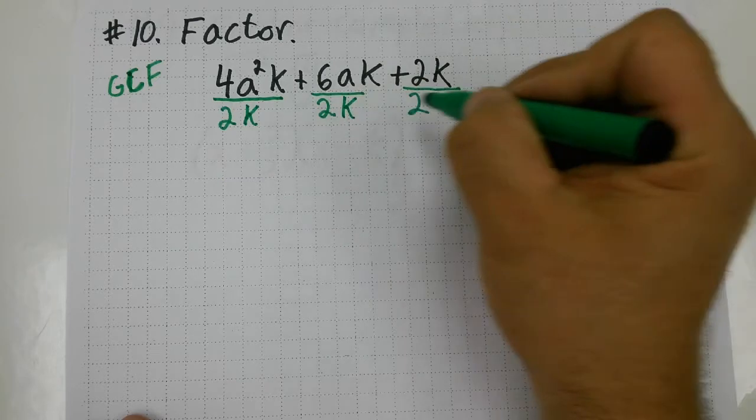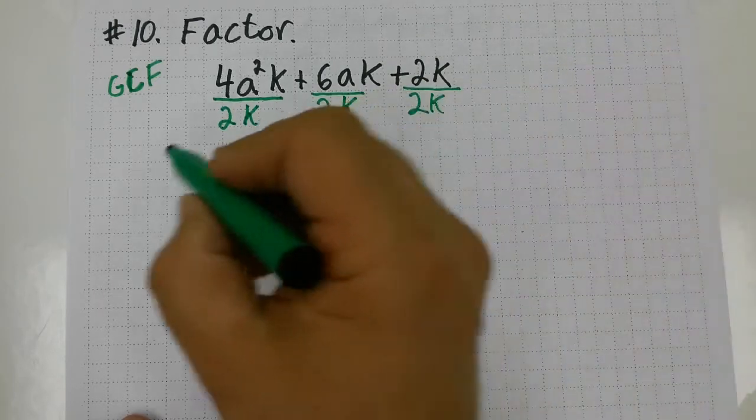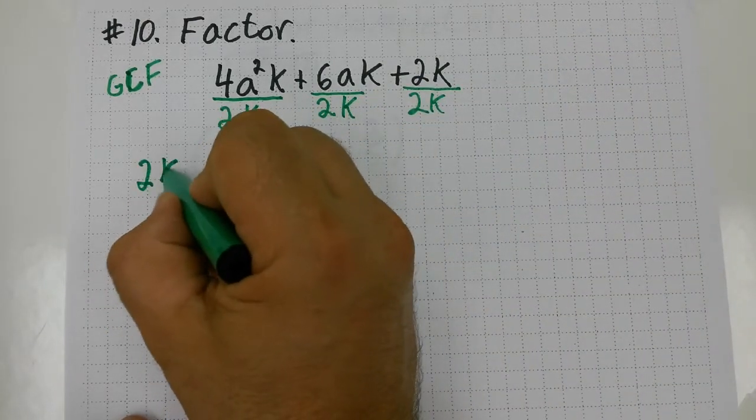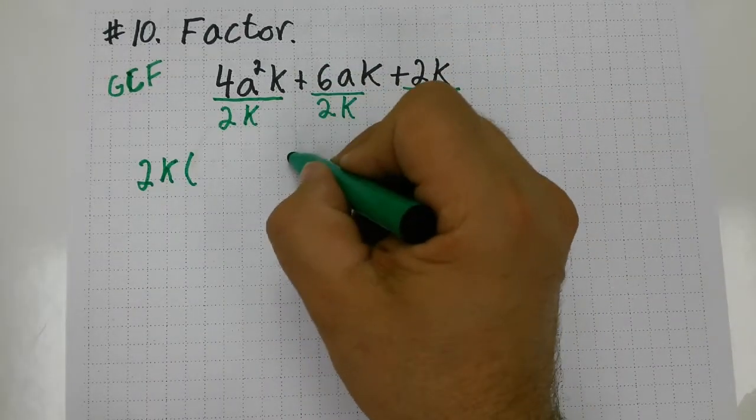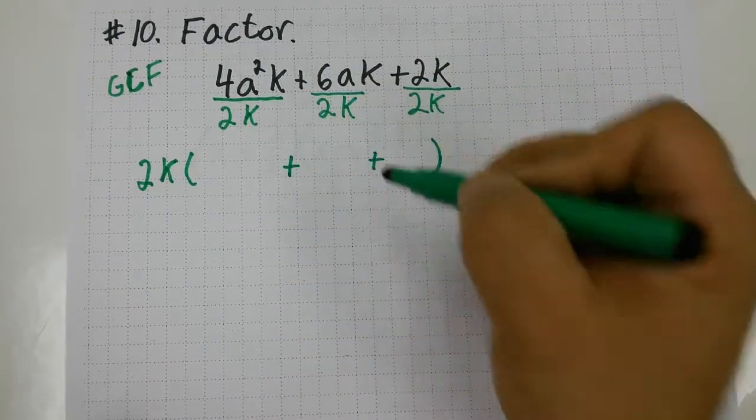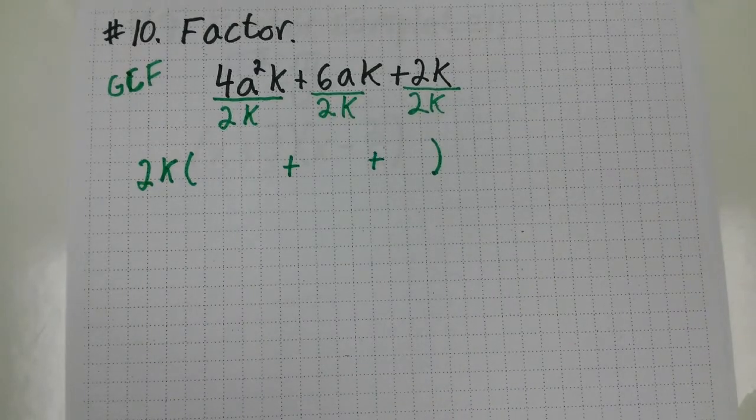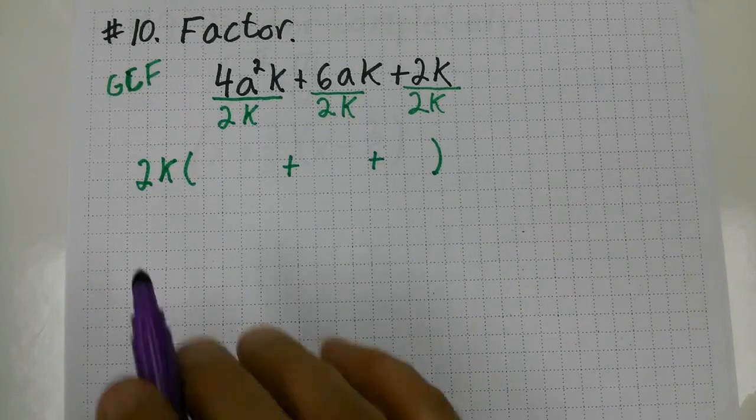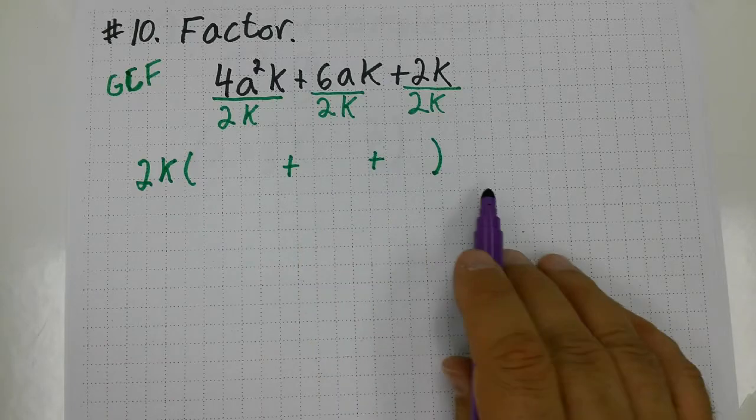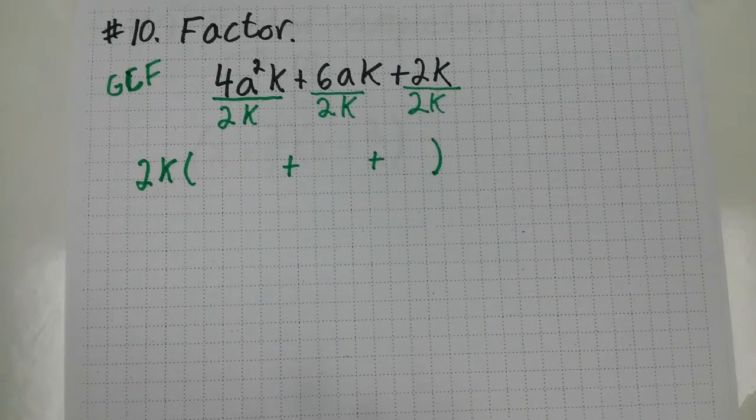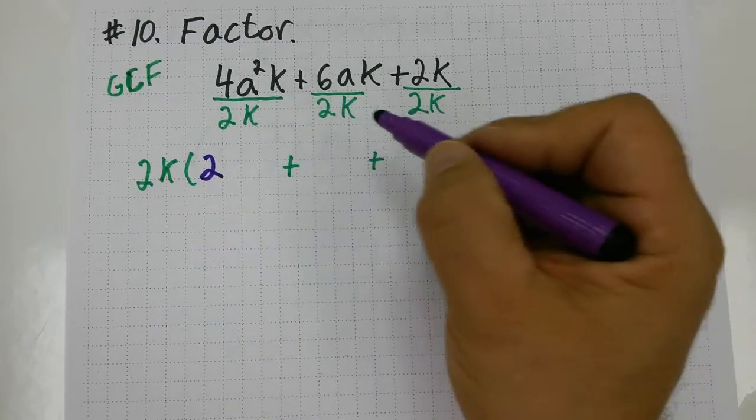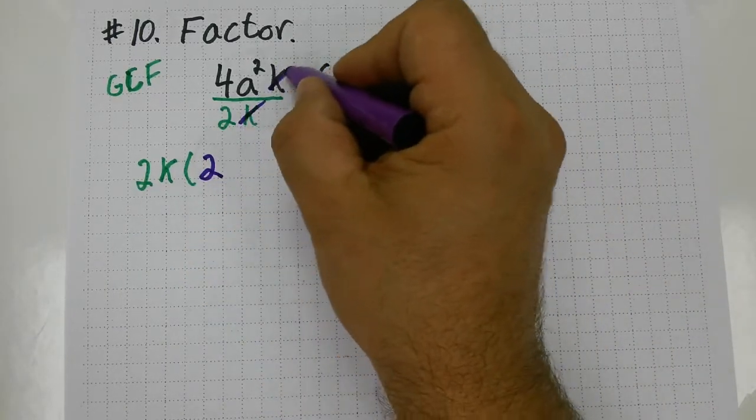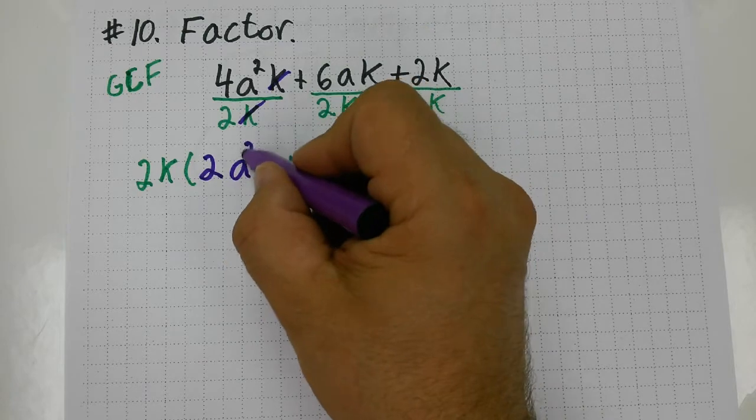So, I'm going to divide each term by k. So, my GCF is going to be 2k. And I like doing this. This kind of breaks it down nicely. I follow down with the plus signs. And now, I'm going to try to determine what my trinomial will be after I simplify it by pulling out the GCF. Well, 4 divided by 2, that gives me 2. k divided by k simplifies, and that just leaves me with 2a squared.